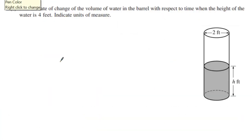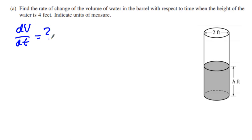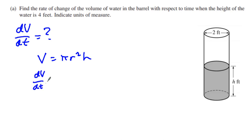Let's take a look at part A. Part A asks us to find the rate of change of the volume of water with respect to time — we're trying to find dV/dT. We have an equation for volume: V = π r² h. We're going to use the product rule and take the derivative with respect to time.